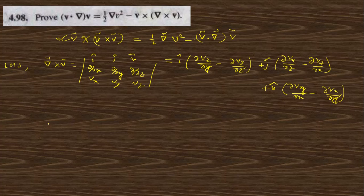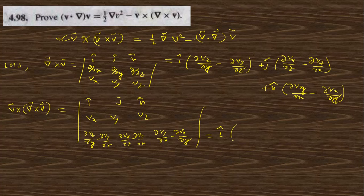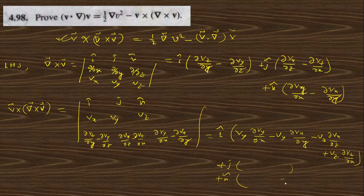Then V cross curl of V gives a determinant with I cap, J cap, K cap; V components Vx, Vy, Vz; and curl of V components (del Vz/del y minus del Vy/del z), (del Vx/del z minus del Vz/del x), (del Vy/del x minus del Vx/del y). For the I cap component we get Vy times del Vy/del x minus Vy times del Vx/del y, minus del Vz times del Vx/del z, plus Vz times del Vz/del x, and so on for J cap and K cap.